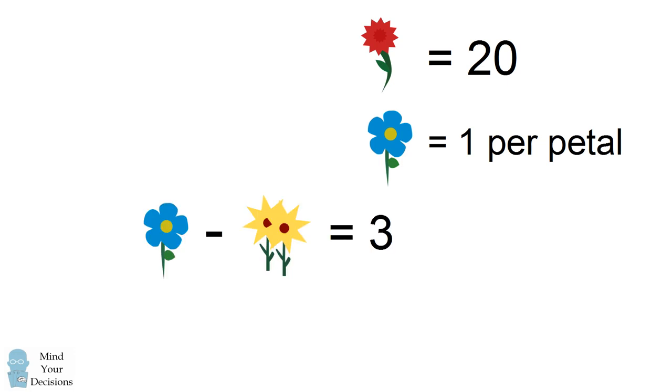The next equation has a blue flower with five petals minus two yellow flowers equal to three. We can assign the blue flower with five petals a value of five. We then are subtracting two yellow flowers to be equal to three. This means that each yellow flower has a value of one.